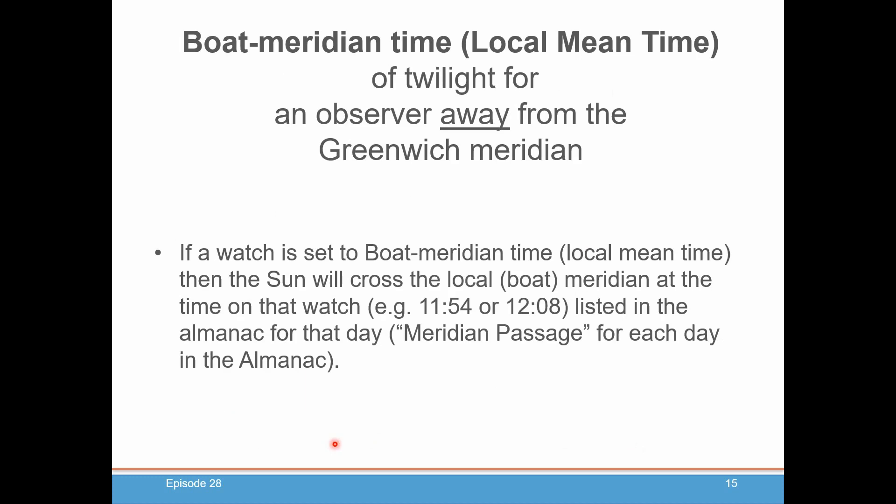Those twilight times are actually good all the way around the Earth if your watch is set to local mean time, also called boat meridian time. With that setting, the sun would cross your local meridian at the time listed in the almanac for that day under the meridian passage. However, there is likely no boater who actually keeps their watch set to local mean time.